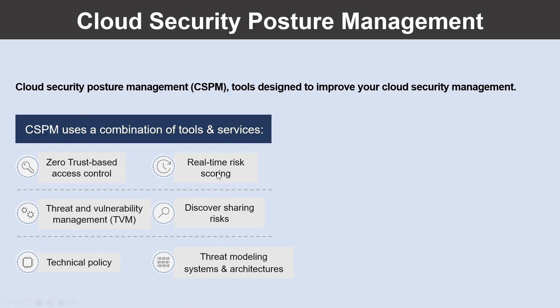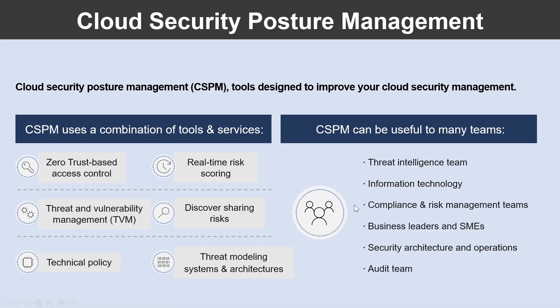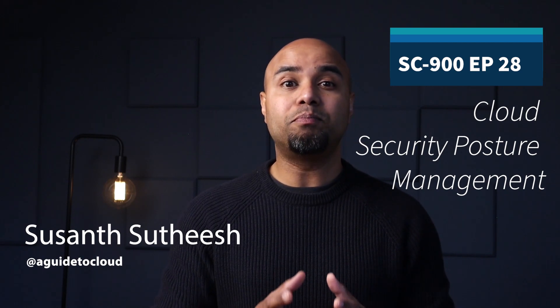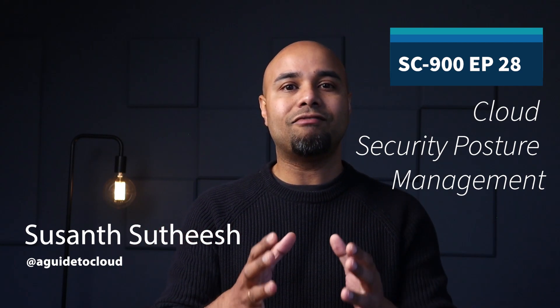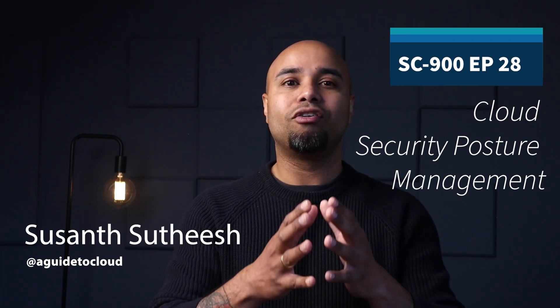The main goal of the cloud security team working on posture management is to continuously report on and improve the organization's security posture by focusing on disrupting a potential attacker's return on investment. The function of CSPM in your organization might be spread across multiple teams or there may be a dedicated team. Cloud Security Posture Management can be useful for many teams, including the threat intelligence team, information technology team, compliance and risk management teams, business leaders and SMEs, and security architecture, operations, and audit teams. Use CSPM to improve your cloud security management by assessing the environment and automatically alerting security staff for vulnerabilities.